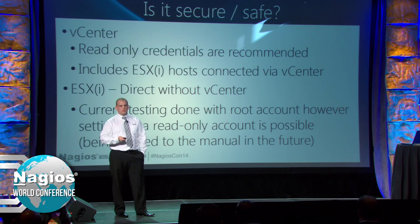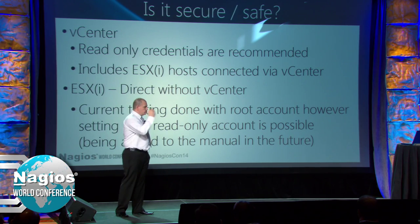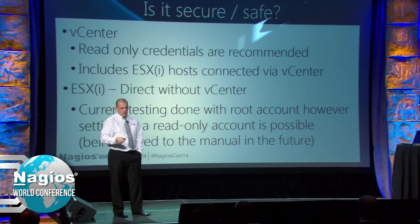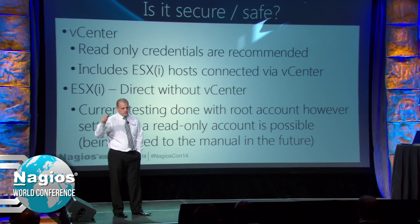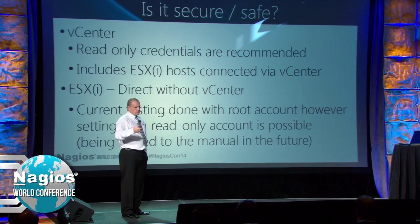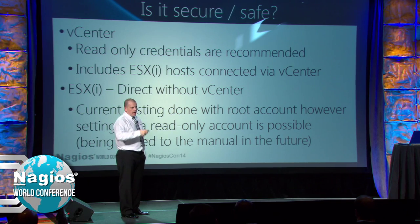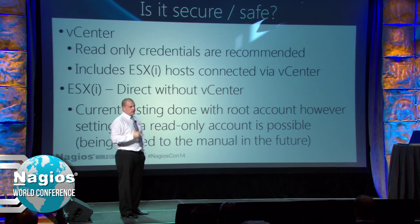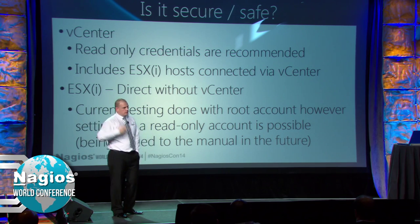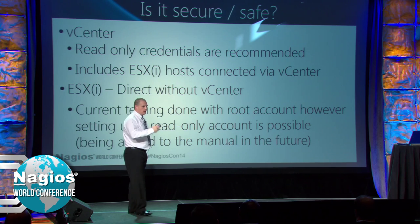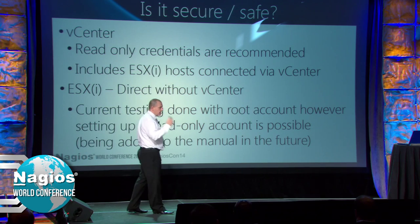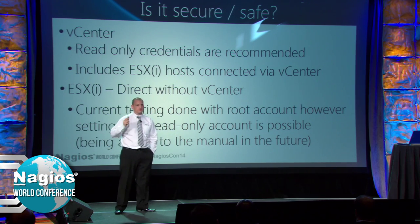The point of the credential repository on the VMA appliance is that you only have to manage the password once. The password is stored in the credential repository, and when you issue the check by SSH to the VMA appliance, the VMA appliance runs the Check VMware plugin. It knows what host it's going to talk to, looks in the credential repository, finds the credentials for that host, and uses them. So if you update your password, you update it once in the credential repository. You don't need any passwords in your Nagios configurations.